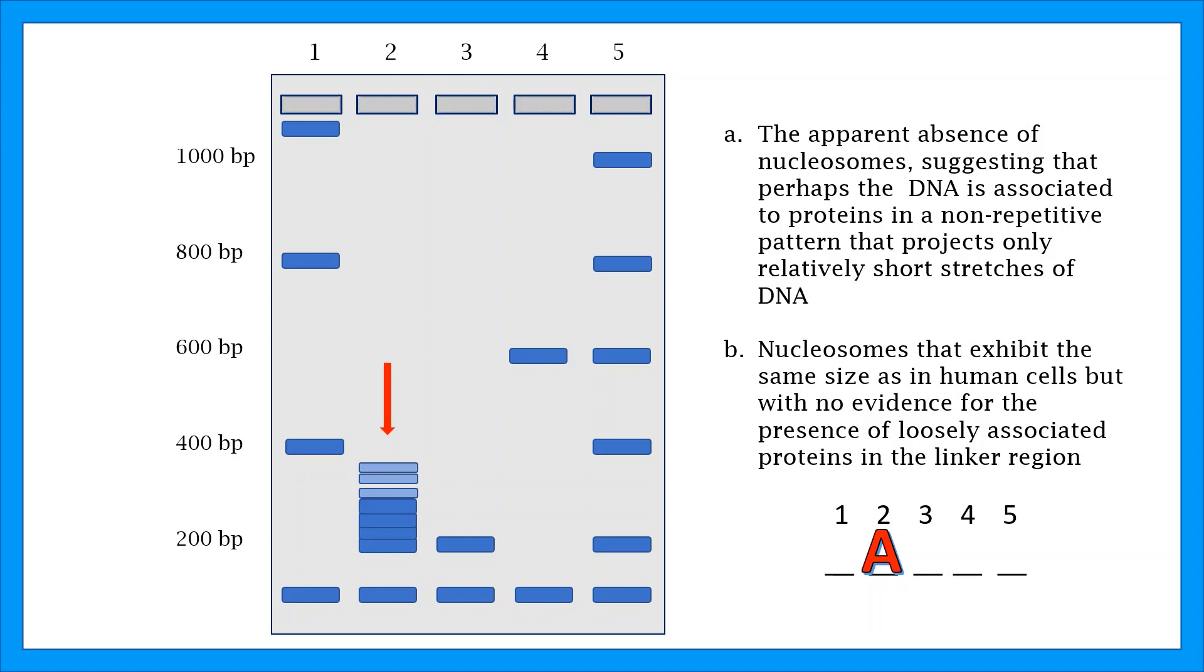Option B. Nucleosomes that exhibit the same size as in human cells, but with no evidence to the presence of loosely associated proteins in the linker region. Because a human nucleosome is about 200 base pairs, and because there are no other DNA fragments visible, we can see that row 3 must be the correct option.